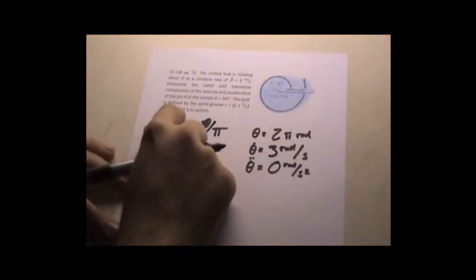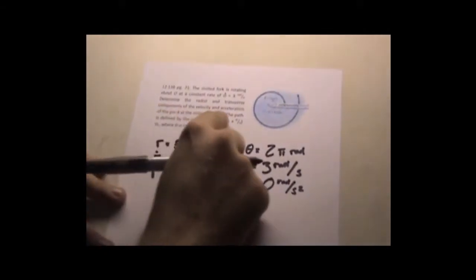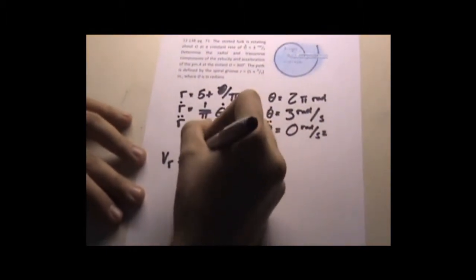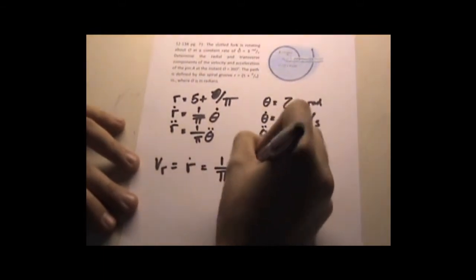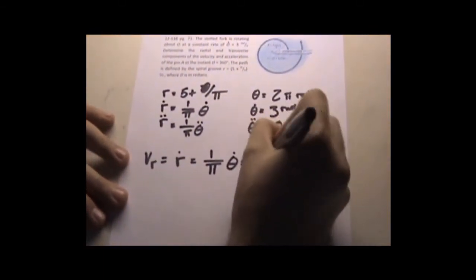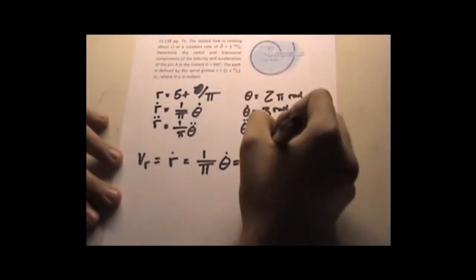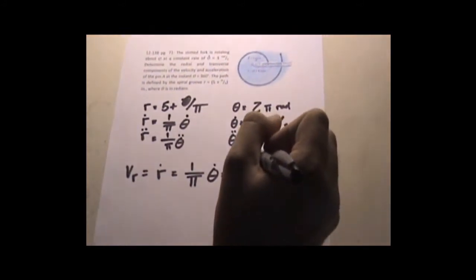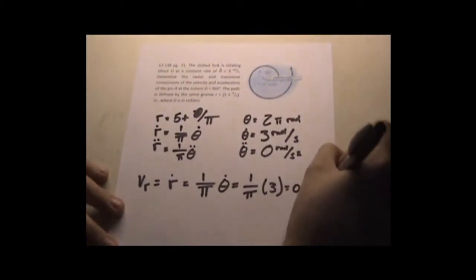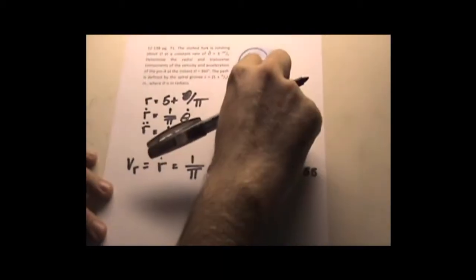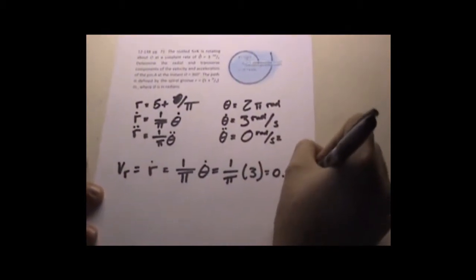Now we got to find the radial and transverse components of velocity and acceleration. So velocity in the radial direction is equal to ṙ. ṙ equals 1 over π, θ̇. Substitute in θ̇ times 3. We get 1 over π times 3.